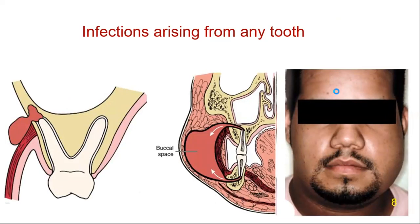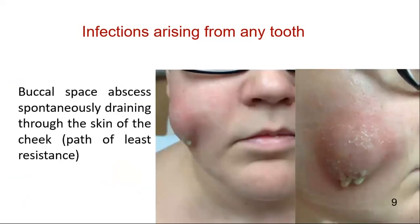The buccal space, which may be commonly involved in infections originating from the maxillary and mandibular teeth, is adjacent to the subcutaneous space. Therefore, buccal space infections most commonly drain spontaneously via the skin at the inferior border of the mandible, as in orocutaneous fistula or sinus tract.